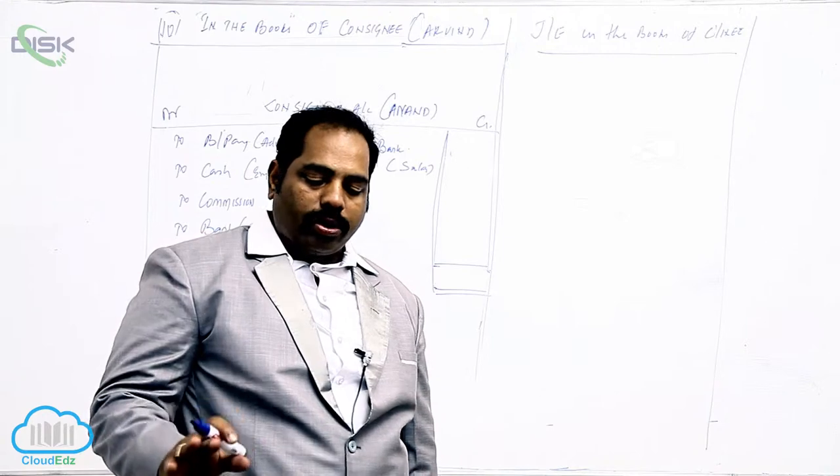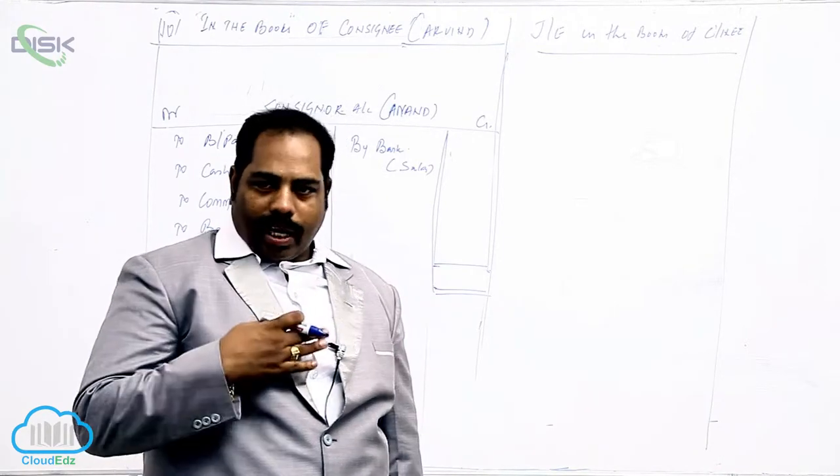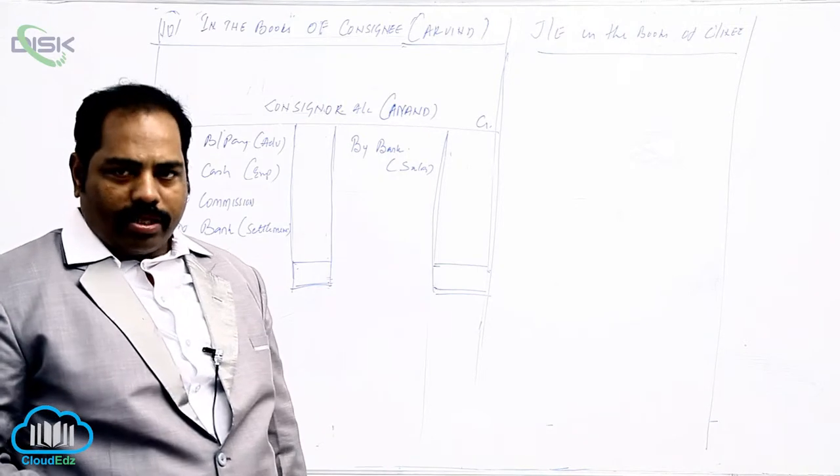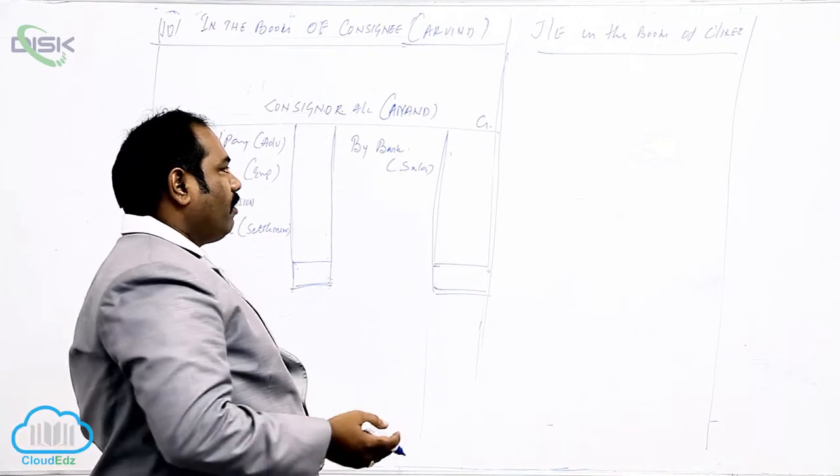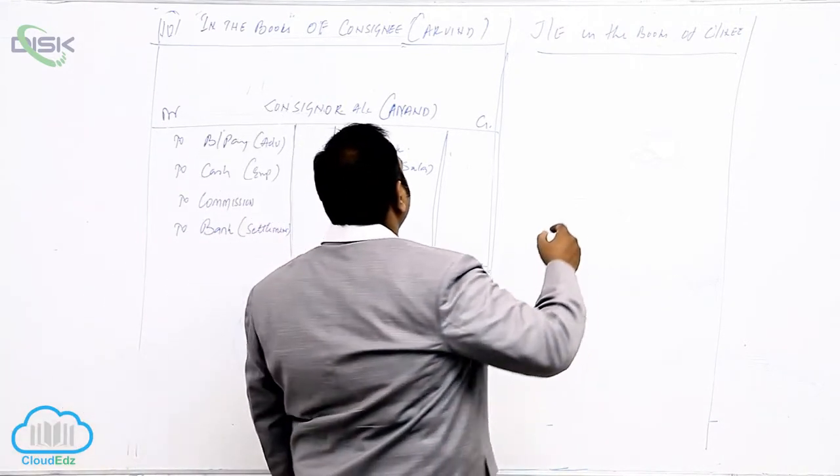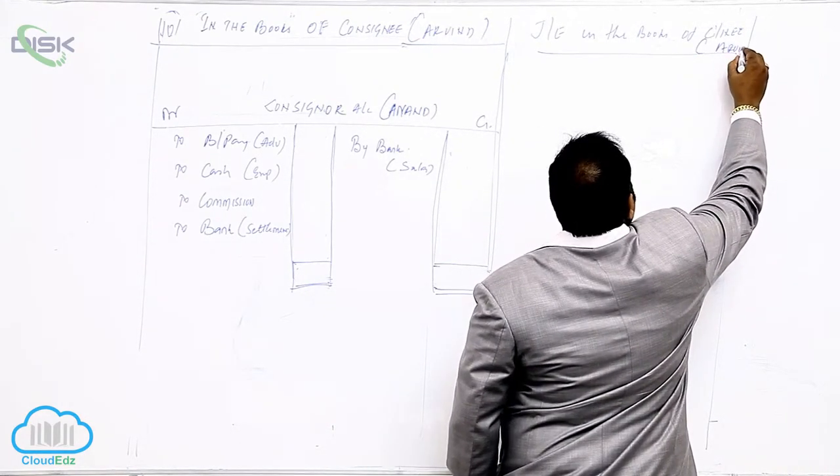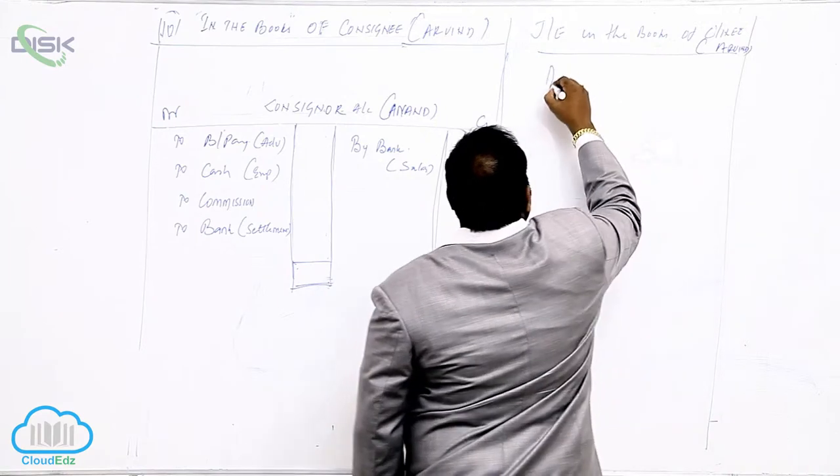Arvind sent 5,000 as advance. So we are consignee. We are giving advance to the consignor. Whenever we give advance, debit the receiver. Who is the receiver? Consignor. Who is the consignor here? Anand. In the books of Arvind, Anand is the receiver.